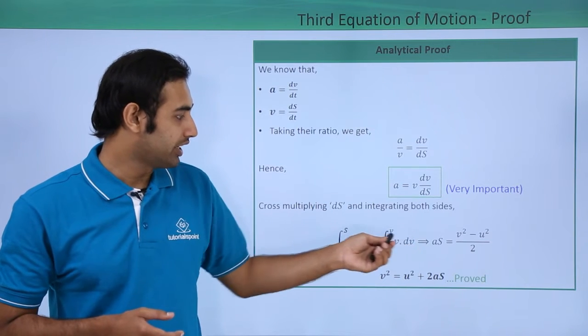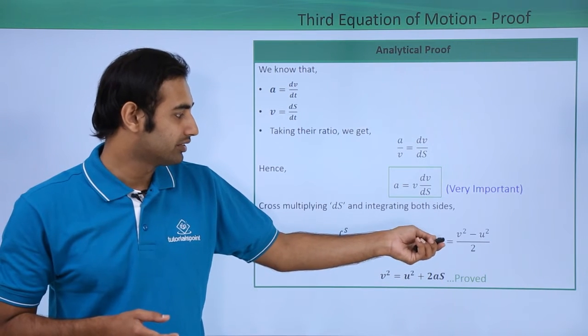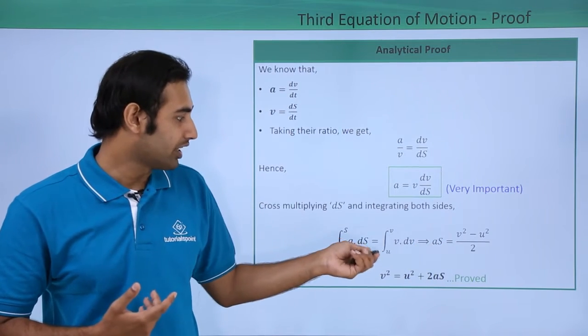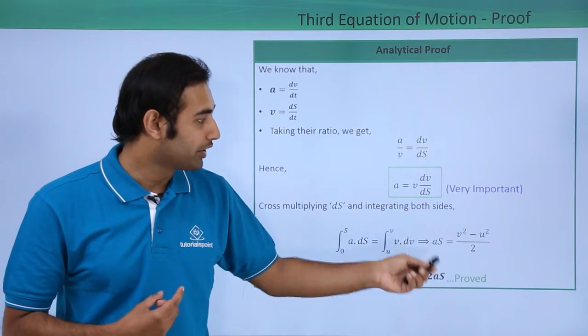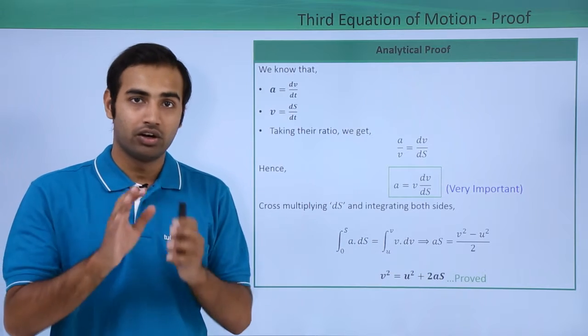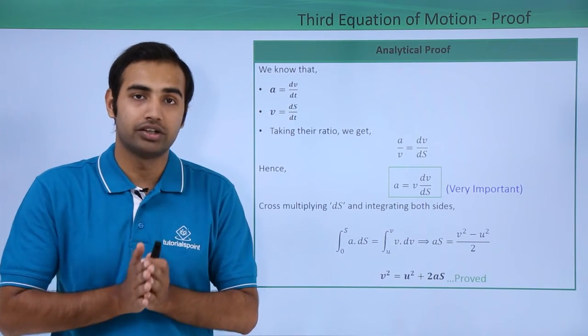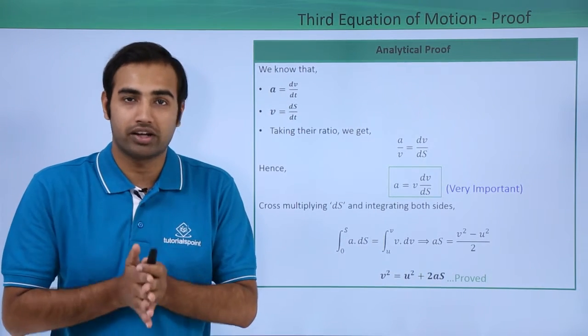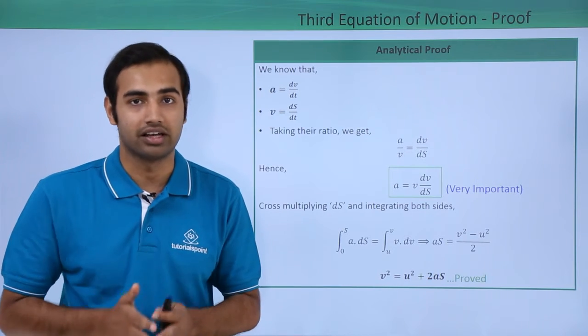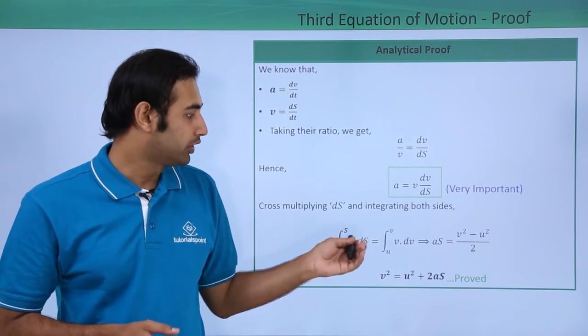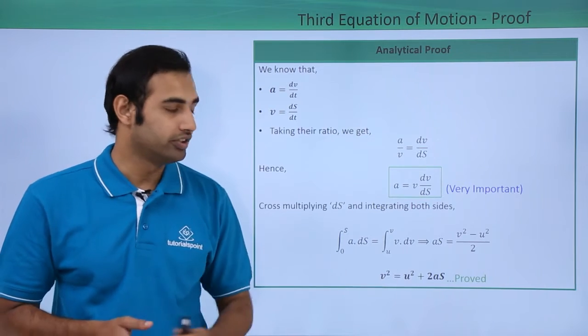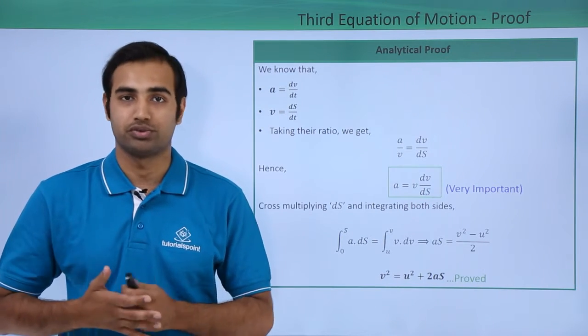So once we have done that, we will simply integrate it both sides. This will come out to be a into s, this will come out to be v²/2 but the limits are from u to v. So it will be v²/2 - u²/2. All the rules of integration must be clear to you. If you have any doubts, you can go back and watch the video on integral calculus. So once we have done this, we will simply cross multiply 2 over there and we will get v² = u² + 2as. This is how we prove third equation of motion.